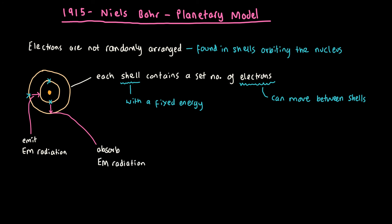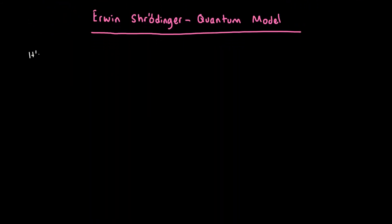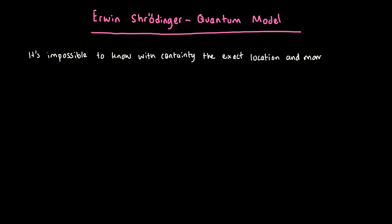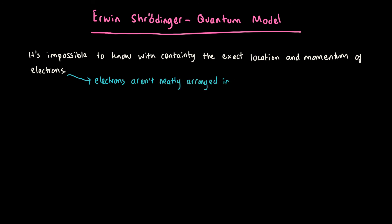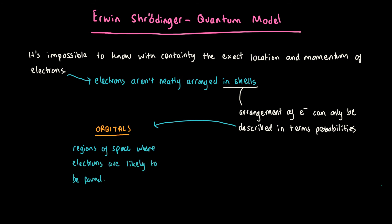The current model of the atom was proposed by Erwin Schrödinger, and this is the quantum model. He said that it's impossible to know with certainty the exact location and momentum of electrons. So we know that there are electrons in the atom, but we can never be sure exactly where they are, because electrons aren't neatly arranged in shells. The arrangement of electrons can only be described in terms of probabilities. This is where he introduced orbitals, which are basically regions of space where electrons are likely to be found.